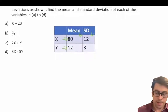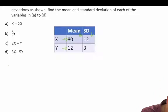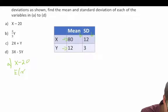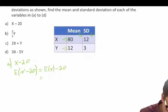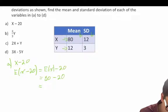Let's go ahead and start with A. We're asked to find X minus 20. So our expected value of X minus 20 is equal to the expected value of X minus that constant of 20, which is equal to 80 minus 20. So our expected value of X minus 20 is 60.